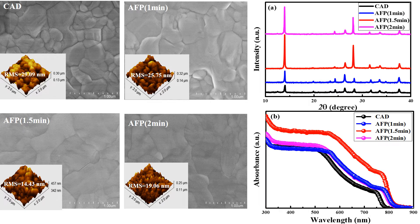In AFM analysis, the root mean square roughness was reduced from 29 to 14 nanometers. This shows that the anti-solvent fumigation process for 1.5 minutes can deliver thin films with higher smoothness compared to the conventional anti-solvent dripping method.